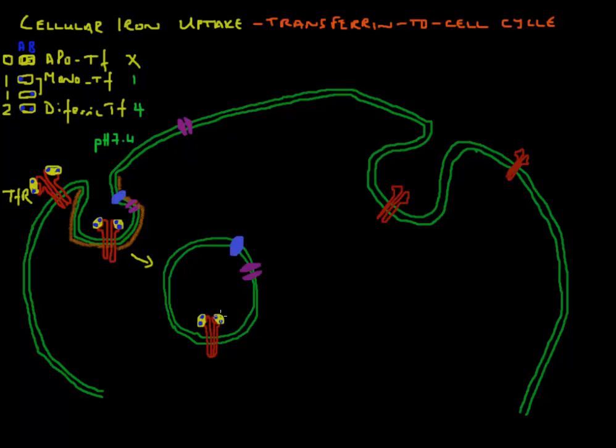Inside this endosome something interesting happens. The first important thing is that hydrogen is pumped into the cell. When hydrogen is pumped in, it will decrease the pH, make this more acidic. And this is important. It will drop the pH to about 5.